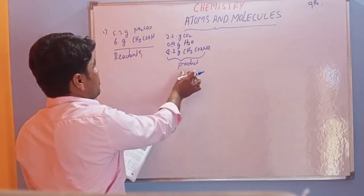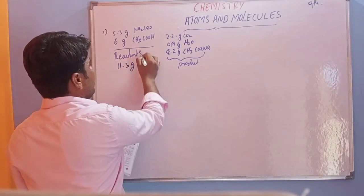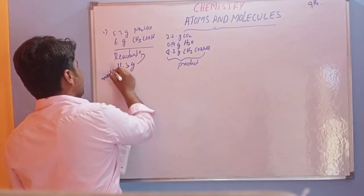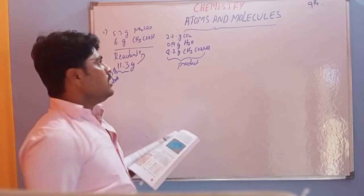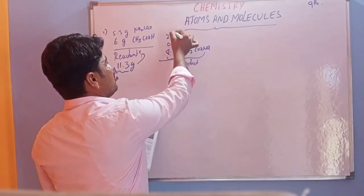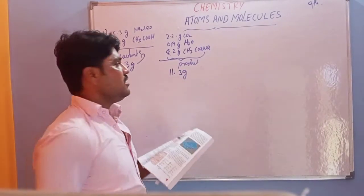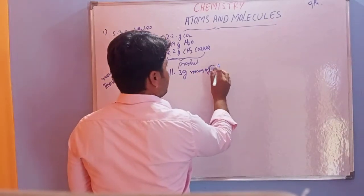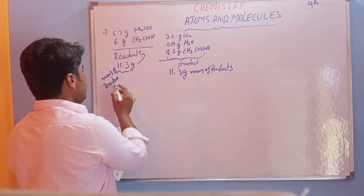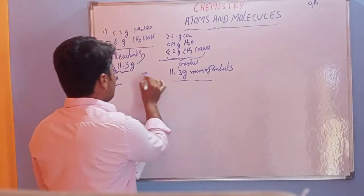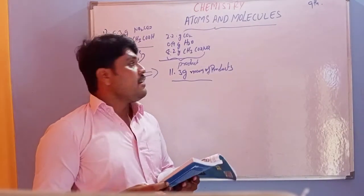Total mass of reactants: 6 plus 5.3 grams equals 11.3 grams. Total mass of products: 8.2 plus 0.9 plus 2.2 equals 11.3 grams. Since the mass of reactants equals the mass of products, this reaction obeys the law of conservation of mass.